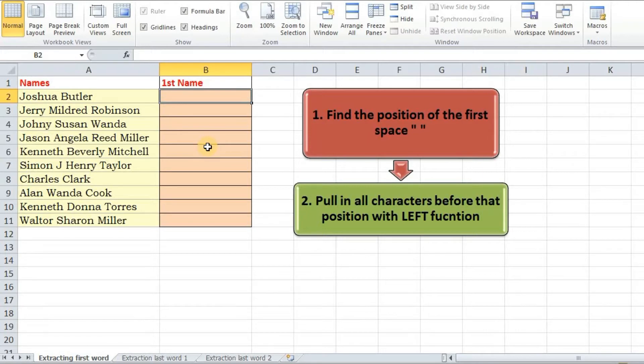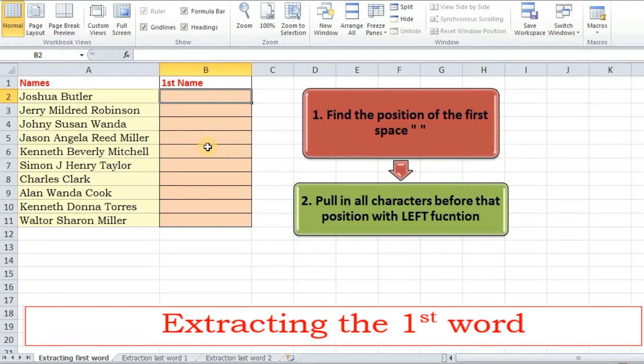Since we are going to be pulling characters from the left we will apply left function, the syntax of which is very simple. We can see we need to extract all the characters before the first space encountered. So basically if we succeed in finding the occurrence of first space we can very easily pull in all the characters before that.